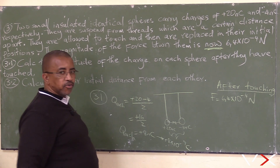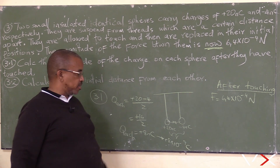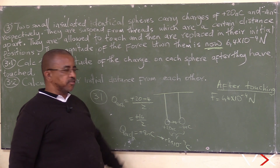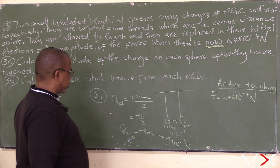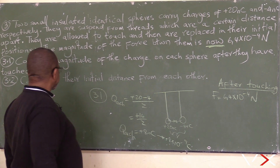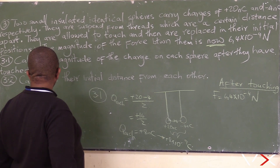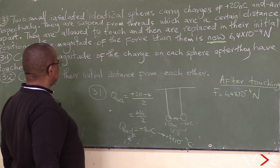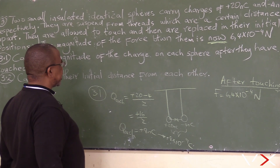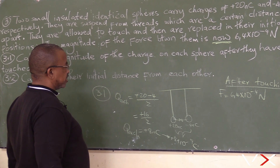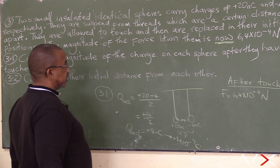So nanocoulombs to coulombs is times 10 to the power minus 9, giving us plus 8 times 10 to the power minus 9 coulombs. Now for part 3.2, calculate the initial distance between the spheres.